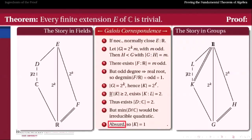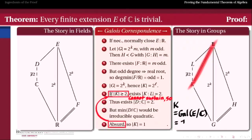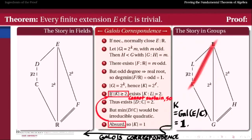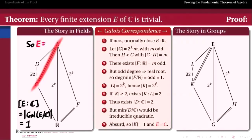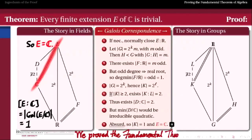What exactly did we contradict? We contradicted the assumption that there was room in the group K to fit a subgroup of index 2 — which required assuming the order of K was greater than or equal to 2. Since that assumption leads to a contradiction, the order of K, which must be a power of 2, must therefore equal 1. Therefore K, the Galois group of E over ℂ, is the trivial group. And since E over ℂ is a normal extension, the Galois correspondence tells us one last time that E and ℂ must be the same field.